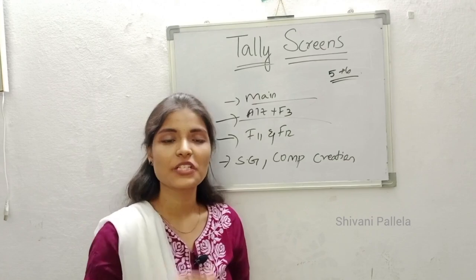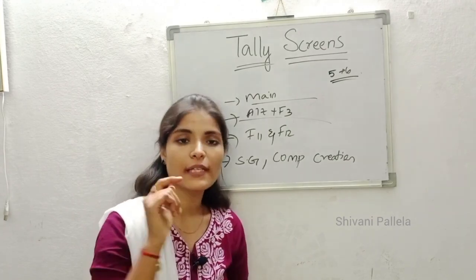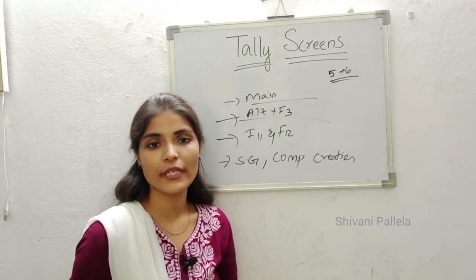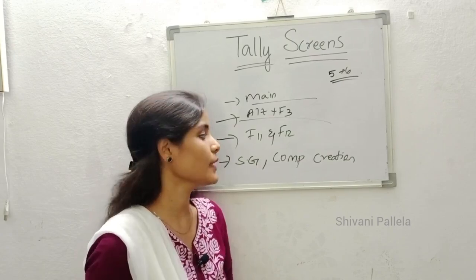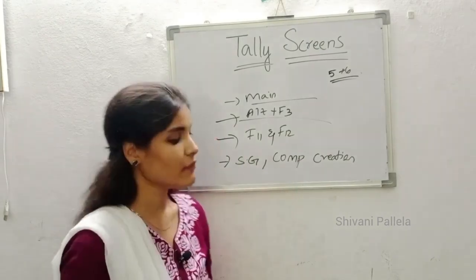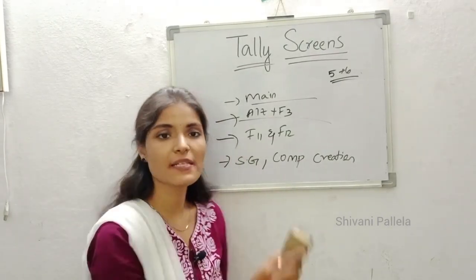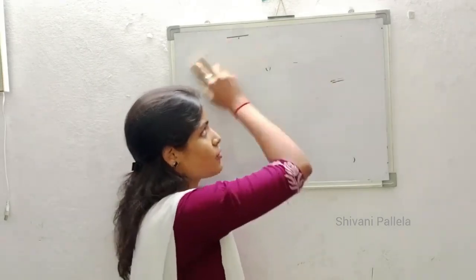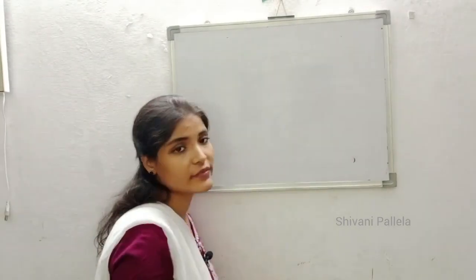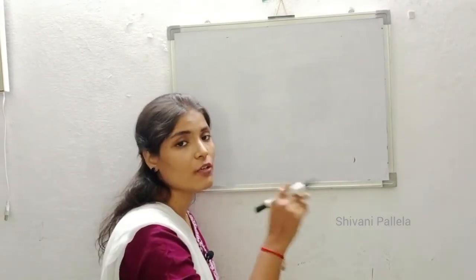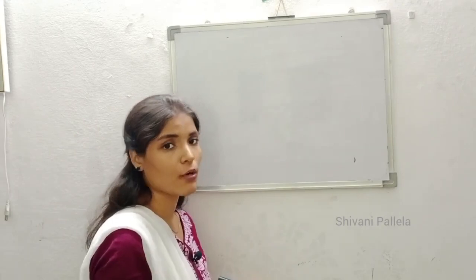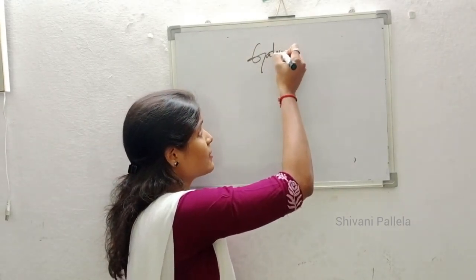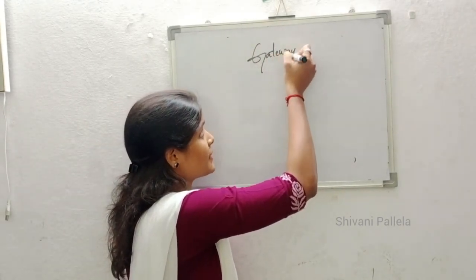That's it — an eight-marks answer by drawing your screens only, and it will be over. For example, how you open WhatsApp: first you unlock your mobile, click on WhatsApp, give your fingerprint — like that only you need to attempt. Now we will discuss about the main screen, which is also called the Gateway of Tally. When you click on the Tally icon, the first screen you see is the Gateway of Tally.